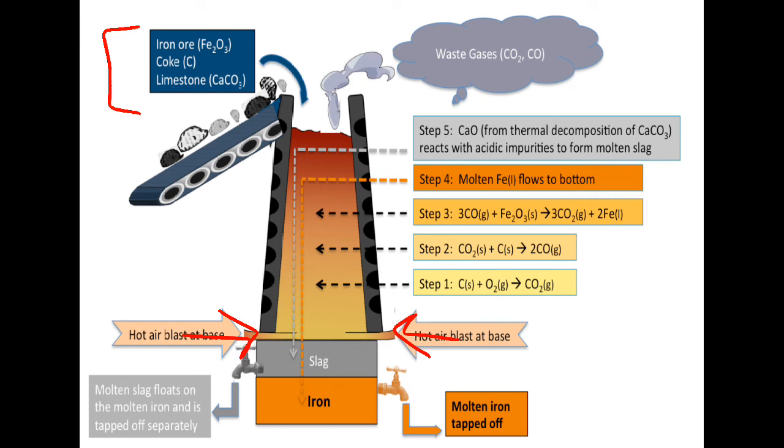First, calcium carbonate is thermally decomposed to give calcium oxide and carbon dioxide. Carbon is also oxidizing to give carbon dioxide. Carbon dioxide is combined with carbon to release carbon monoxide. The basic reaction is taking place in the third step where iron oxide is reacting with carbon monoxide to give liquid iron, and carbon dioxide is released as a by-product.